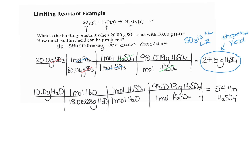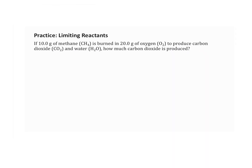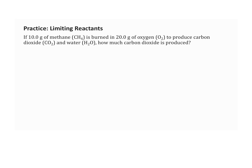Some limiting reagent problems can be tricky — not every problem announces itself as a limiting reactant problem. Often it will just say 'these two things react, how much product can be produced?' The context clue is: if you have two or more reactants with given amounts, it is a limiting reagent problem.